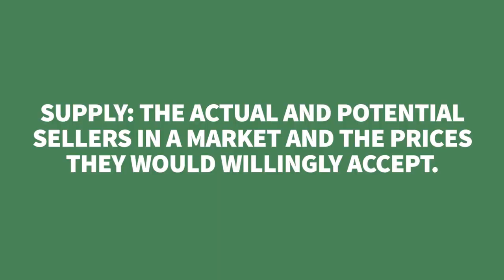Supply refers to the actual and potential sellers in a market and the prices they are willing to accept. We're relating prices and quantities. When thinking about supply, on that vertical axis, the value dimension is the value of the opportunities foregone — that is, its costs. On a supply curve, you've got cost on the vertical axis and quantities on the horizontal axis. People are willing to undergo a higher cost at higher prices, which goes along with the upward sloping supply curve according to the law of supply.